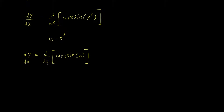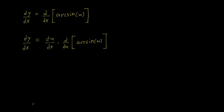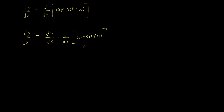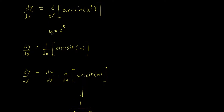Now we have a function in terms of u being differentiated with respect to x, so we're going to have to use the chain rule here. So dy/dx equals du/dx times d/du of arcsine of u. The derivative of arcsine of u with respect to u is going to be one over the square root of one minus u squared.